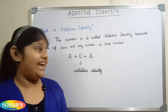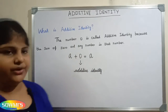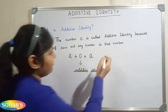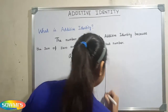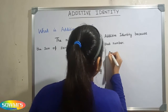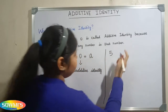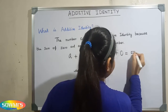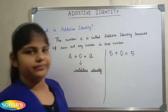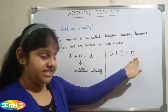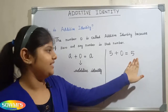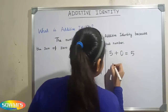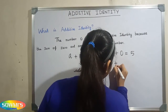When we add any number with zero, the answer will be the same. For example, take five: five plus zero is equal to five. Here the additive identity of five is zero.